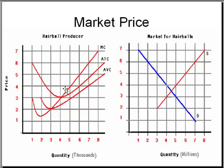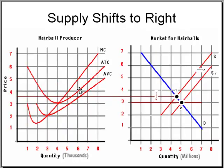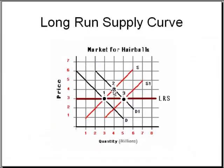Since this is a constant cost industry, none of the relevant cost curves will change. As you can see in this slide, I have drawn the market price over to here and we look where marginal revenue equals marginal cost. The firm is making a slight economic profit. This induces more firms to begin to supply and enter the market, which will shift the supply curve to the right and lower the market price — it will lower it to $3, and this firm will now be in the long run.